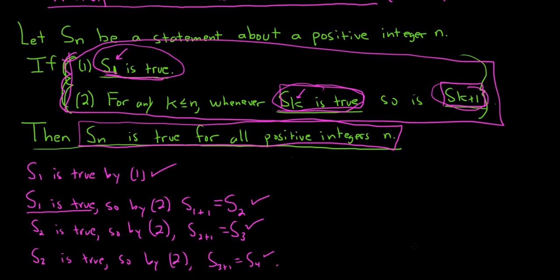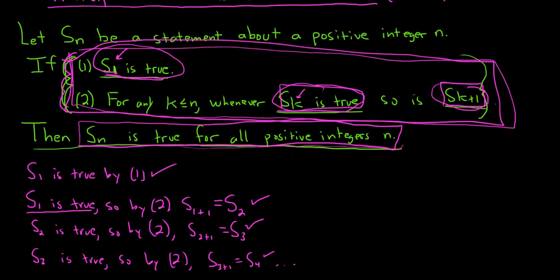You just keep going on forever, and it ends up being true for all positive integers n. I hope this video has helped you understand why induction actually works. When you're doing an induction proof, you follow certain steps — there's a step called the base case and a step called the induction hypothesis — and you'll see those in the videos that follow. But in this video, I just wanted to explain why the statement works. Thank you.